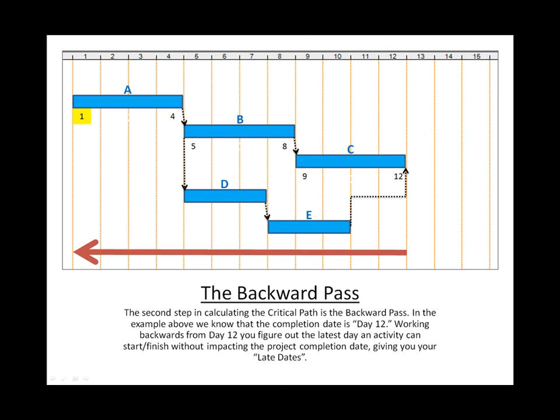If we jump down to activity E, you can see its late finish is twelve and its late start is ten. D is nine and seven.